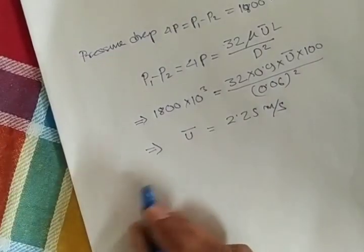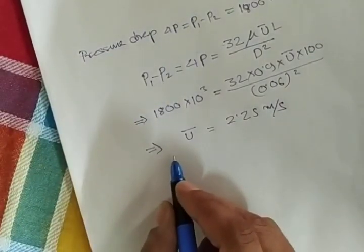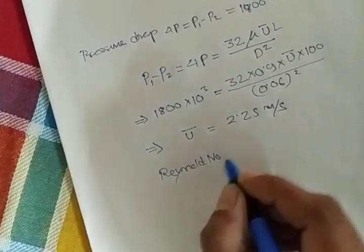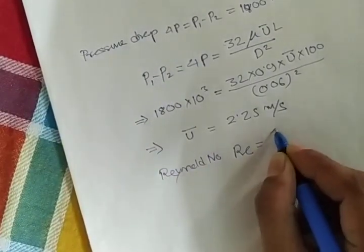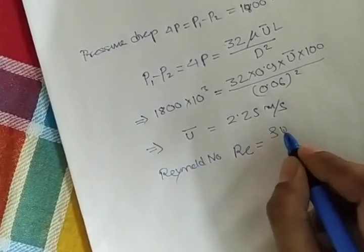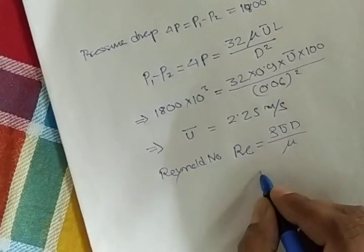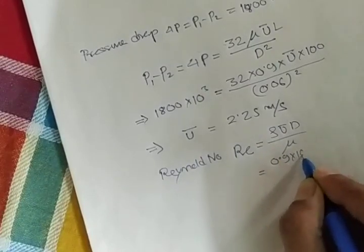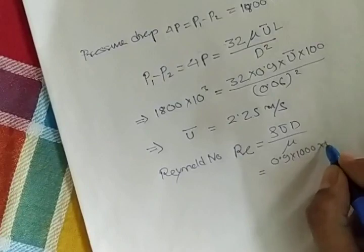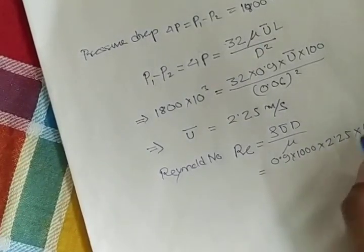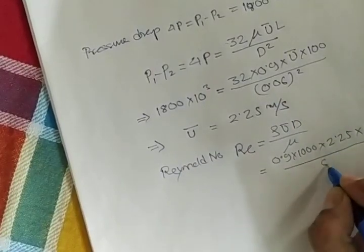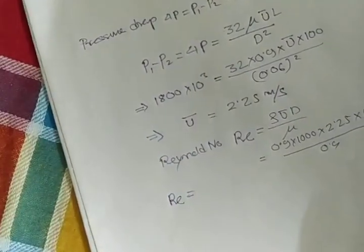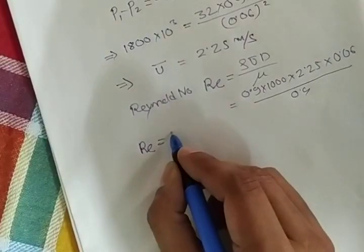Let's check whether this velocity comes under laminar flow or not. For that purpose we use Reynolds number. Re is rho u bar d by mu. Density is 0.9 into 1000, velocity is 2.25, diameter is 0.06, and mu is 0.9. If you do the calculation, Re equals 135.